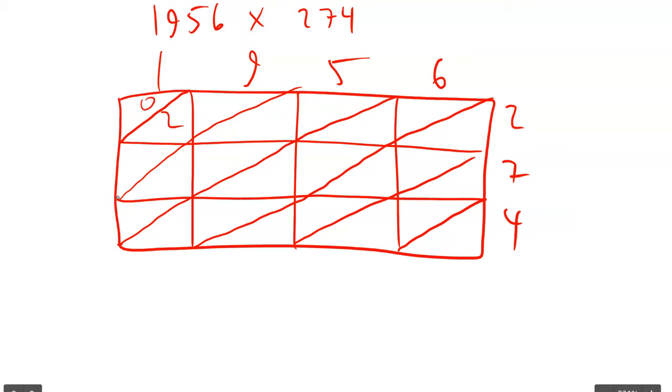All right, so 1 times 2, 1 times 7, 1 times 4, 9 times 2, 9 times 7, 9 times 4, 5 times 2, 5 times 7, 5 times 4, 6 times 2, 6 times 7, 6 times 4. All right, and then I'm just going to add up the diagonals.